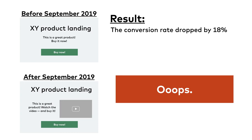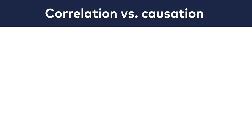Now this was a hypothetical example of course, but I've seen very similar things in real life. Can you spot the mistake? It's the correlation versus causation issue again. The analytics team analyzed the historical data and saw a correlation between watching the video and the conversion rate, but the real question is: what's the cause and what's the effect?